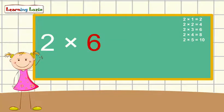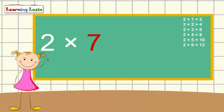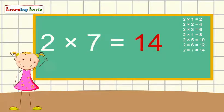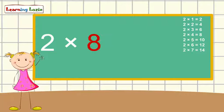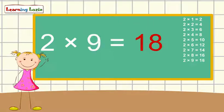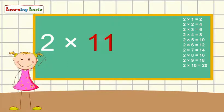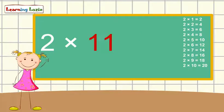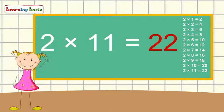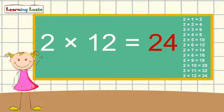Two times six is twelve, two times seven is fourteen, two times eight is sixteen, two times nine is eighteen, two times ten is twenty, two times eleven is twenty-two, two times twelve is twenty-four.